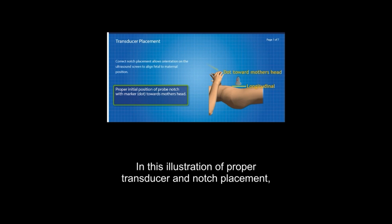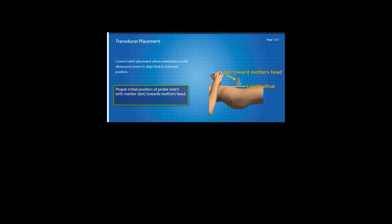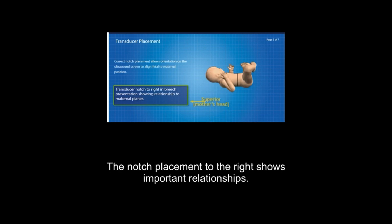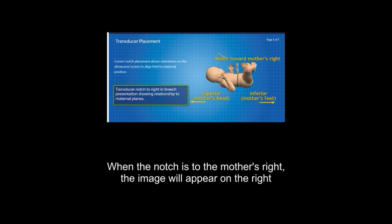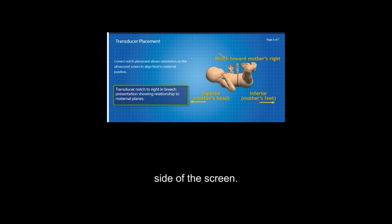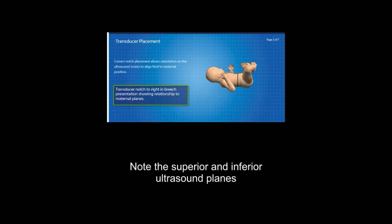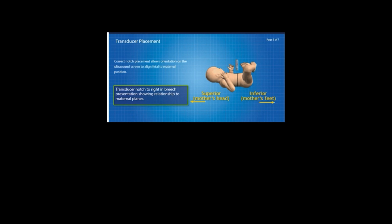In this illustration of proper transducer and notch placement, the notch is pointed toward the mother's head. The notch placement to the right shows important relationships. When the notch is to the mother's right, the image will appear on the right side of the screen. Note the superior and inferior ultrasound planes.